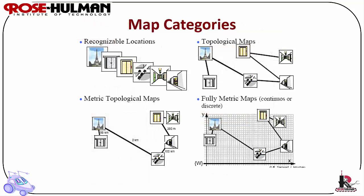Map Categories. The odometric map is only useful if the world does not change and the robot is able to accurately keep track of distances and turns. The landmark-based map does not require the robot to be accurate but the world still cannot change. The fully metric map is the most complicated and most useful because the robot has to take measurements and store more information.